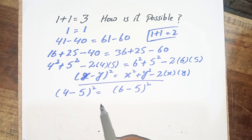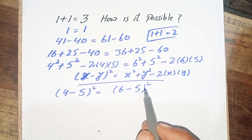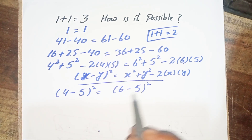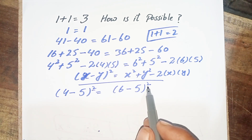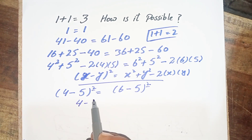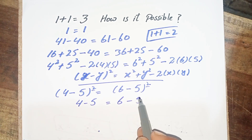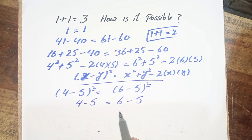Please like and subscribe our channel to watch more videos. Since the powers are the same on both sides, we compare the values and write: 4 minus 5 is equal to 6 minus 5. We add positive 5 to both sides.